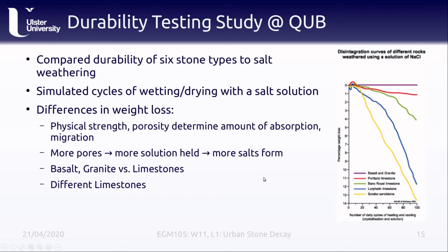There's also a big range for each of the different limestones. Portland limestone — like the limestone that makes up St. Paul's Cathedral — did pretty well with only about one percent weight loss, compared to Lorphelin limestone, which had nearly 14 percent weight loss. Part of this is due to how much more porous Lorphelin limestone is than Portland: Lorphelin limestone is at about 20 percent porosity compared to about two percent for Portland and Banque Royale limestones in this study.